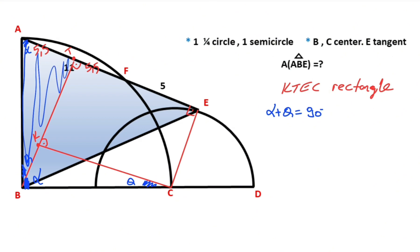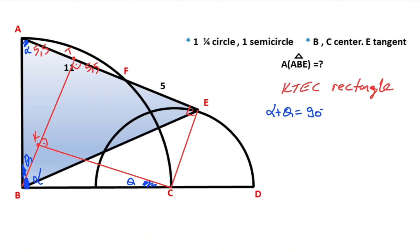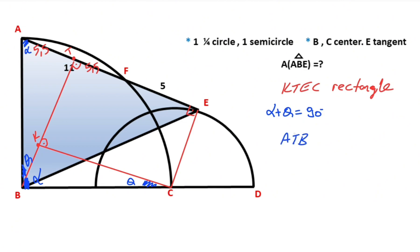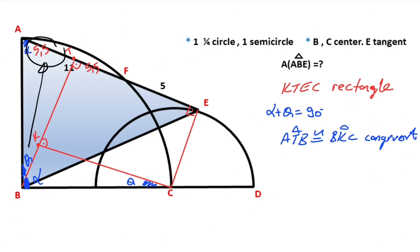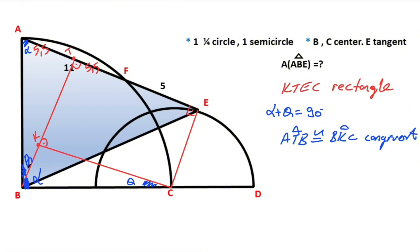If you focus on these triangles, this triangle and this triangle have the same angles. Notice that the sides opposite the 90 degrees are the same, which means these two triangles are congruent. Therefore, if there is a 5.5 opposite theta, the side opposite theta in the other triangle must also equal 5.5.